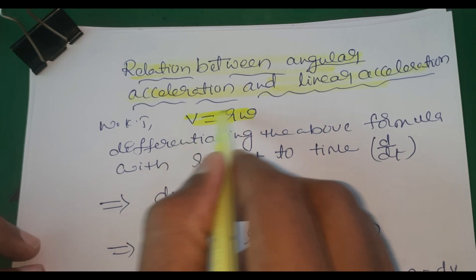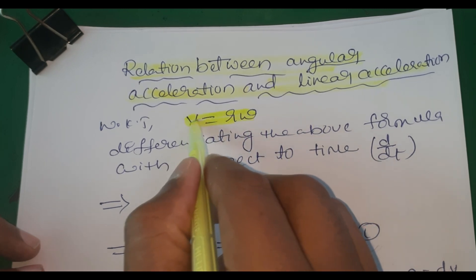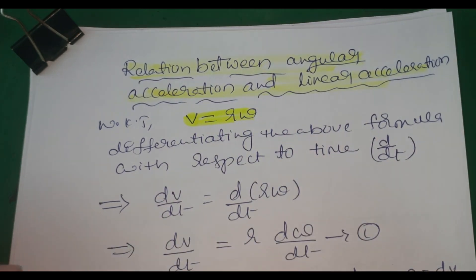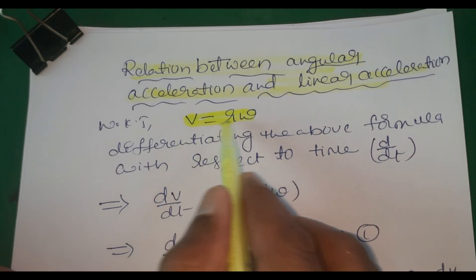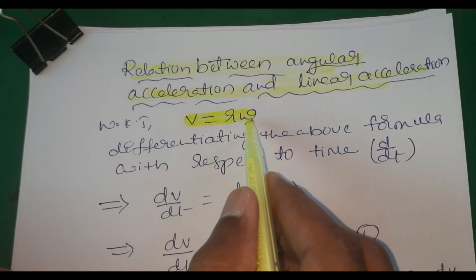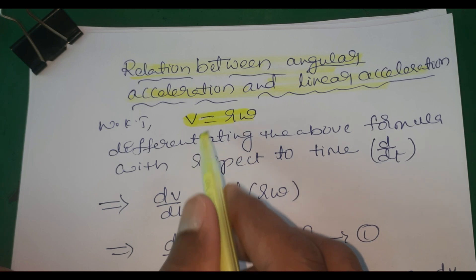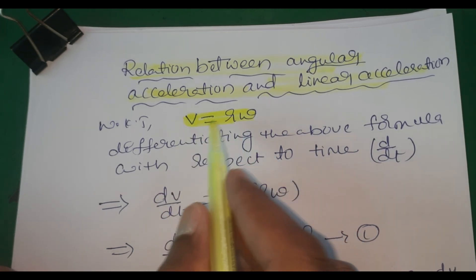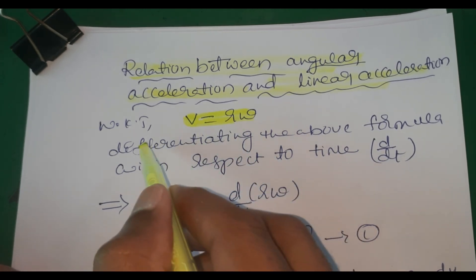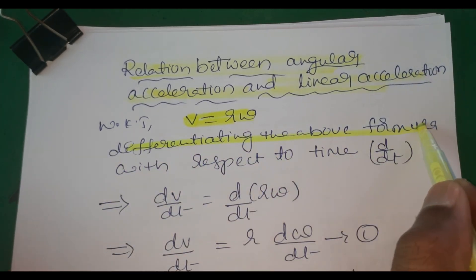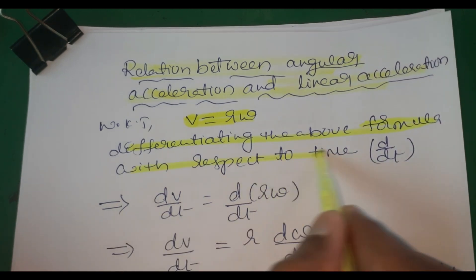We know the relation between angular velocity omega and linear velocity v: v is equal to r times omega. This is an important formula we have already derived in previous playlists. Here, v is linear velocity, r is the radius of the circular path, and omega is angular velocity.